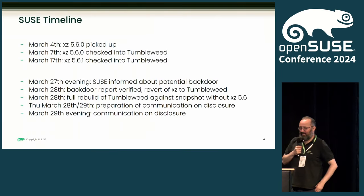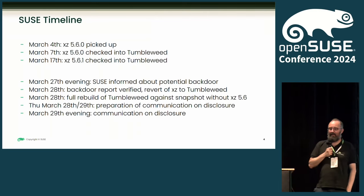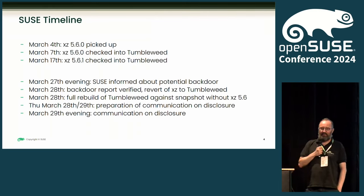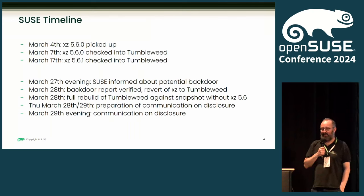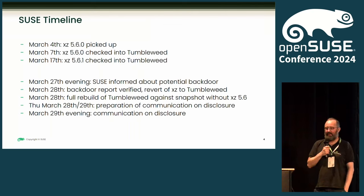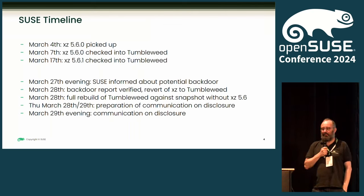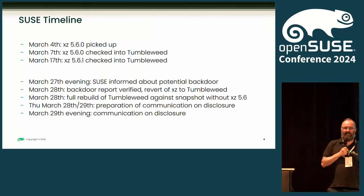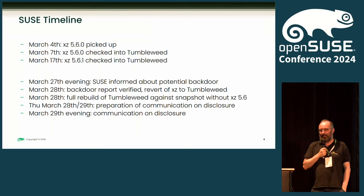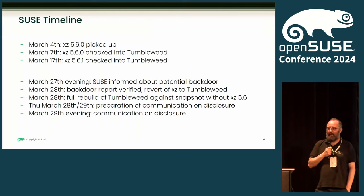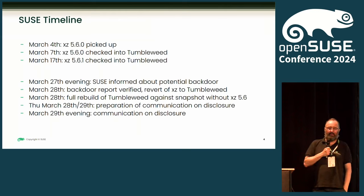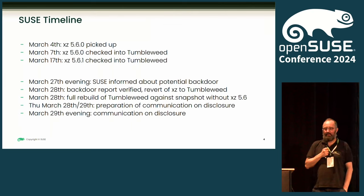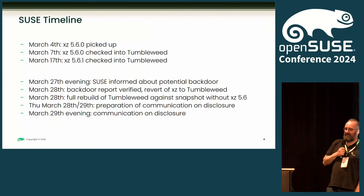So how did we see this from the SUSE timeline? On March 4th, our package maintainers picked up that there is a new major version of XZ, the 5.6.0 release, promising speed-up improvements and various nice things. As usual, for Tumbleweed we picked this up, it went through integration, was good, and was checked in on March 7th and released to our Tumbleweed users. All our Tumbleweed users got it around the March 7th date.